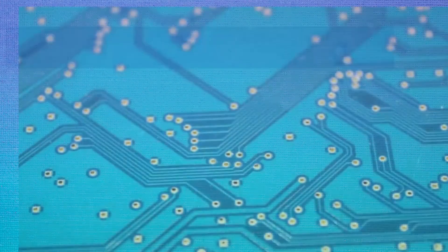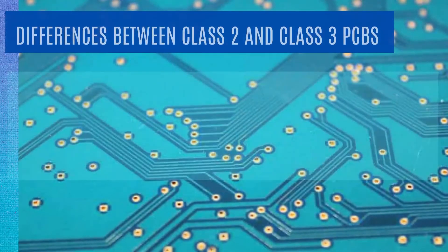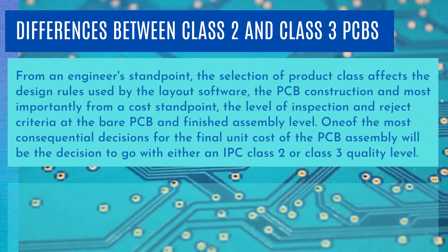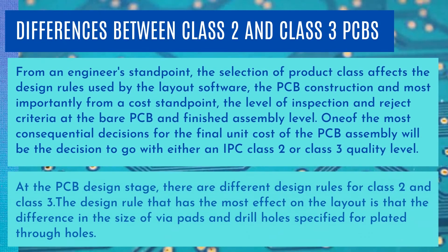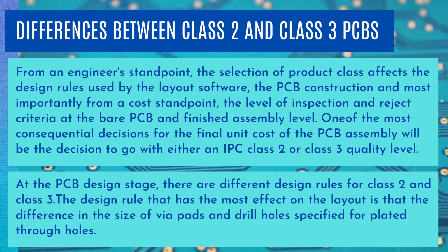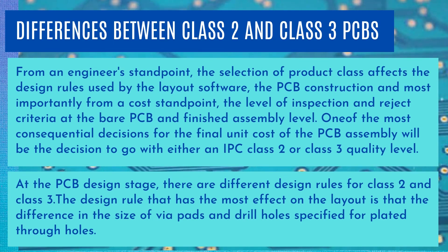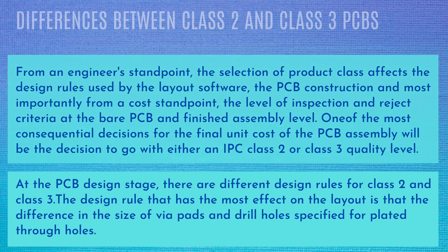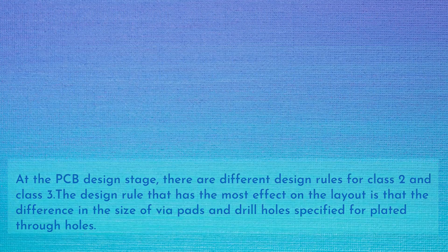From an engineer's standpoint, the selection of product class affects the design rules used by the layout software, the PCB construction, and — most importantly from a cost standpoint — the level of inspection and reject criteria at the bare PCB and finished assembly level. One of the most consequential decisions for the final unit cost of the PCB assembly will be the decision to go with either an IPC Class 2 or Class 3 quality level. At the PCB design stage, there are different design rules for Class 2 and Class 3. The design rule that has the most effect on the layout is the difference in the size of via pads and drill holes specified for plated through holes.